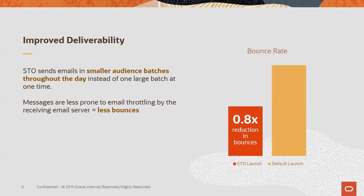With Send Time Optimization, you'll get improved deliverability, sending in smaller batches throughout the day instead of one large batch at one time. Messages are less prone to email throttling by the receivers, meaning less bounces. As an example, you can see some metrics here with a Send Time Optimization launch showing a significant reduction in bounces compared to the default launch.